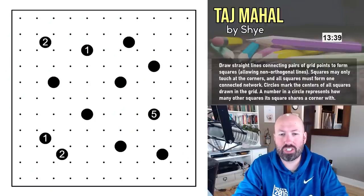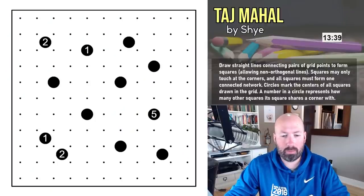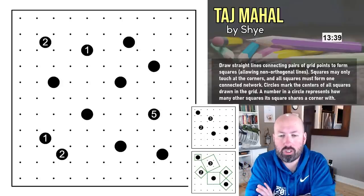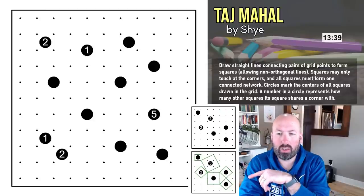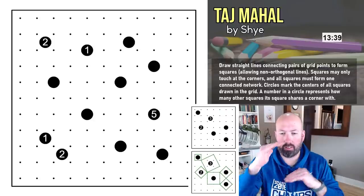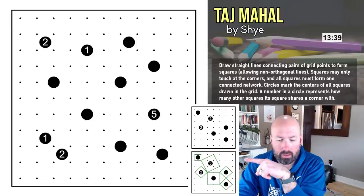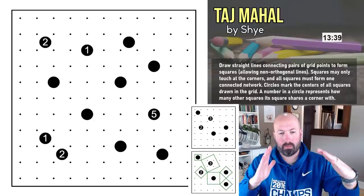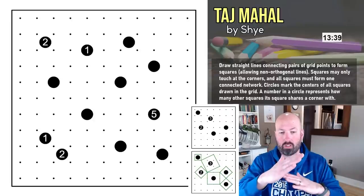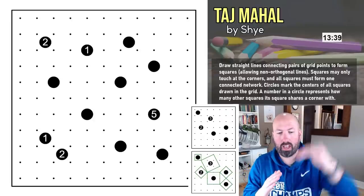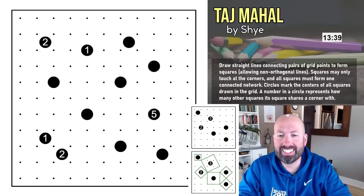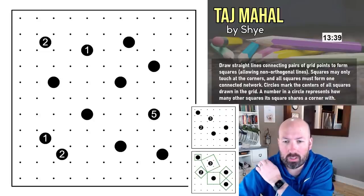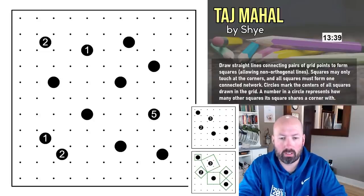Our first puzzle is a Taj Mahal, this one's by Shai. I'm going to pull up the example here because I think we're going to need it. The rules say: draw straight lines connecting pairs of grid points to form squares, allowing non-orthogonal lines, which just means it doesn't have to be straight — you can do angled lines. So you'll notice that three over there is diagonal but between points as well.